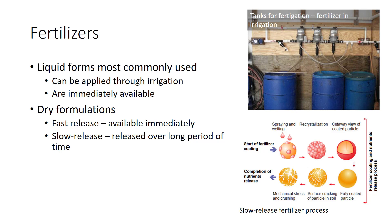Media and foliar testing should be done to avoid deficiency problems in greenhouse crops. It is important because as soon as visual symptoms are observed, the plant is being stressed, which reduces quality and yields.